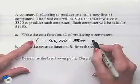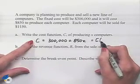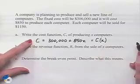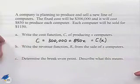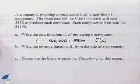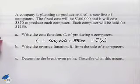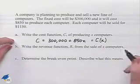Now we have C equals this. We could also have written this in function notation and used C of x. Both are useful. Next, Part B: Write the revenue function R from the sale of x computers.